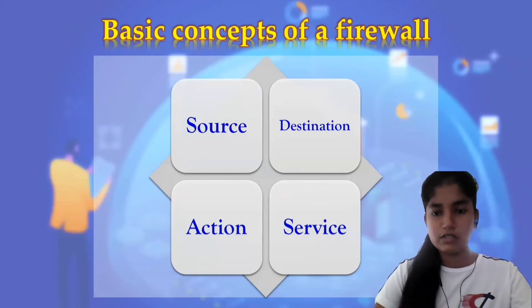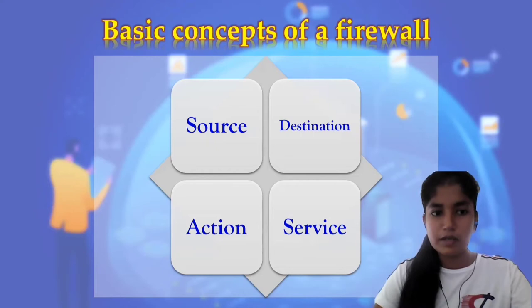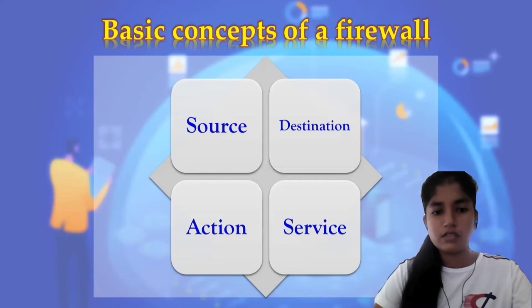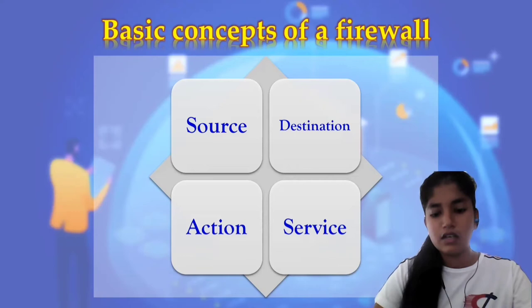Firewall rules can take the following actions. First is 'allow,' which explicitly allows traffic matching the rule to pass. Second is 'bypass,' which allows traffic to bypass both firewall and intrusion prevention analysis. Firewall as a Service is a firewall solution delivered as a cloud-based service, allowing companies to simplify IT infrastructure. It provides next-generation firewall capabilities like filtering, advanced threat protection, intrusion prevention systems, and DNS security.